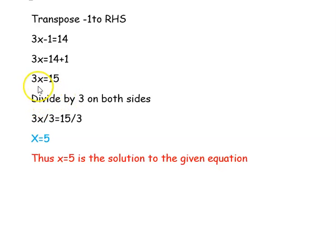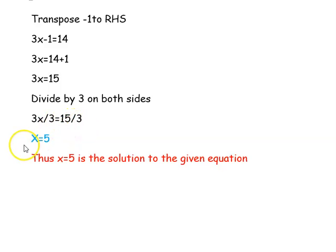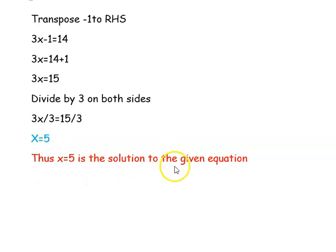We are going to divide by 3 on both sides of the equation. 3x divided by 3 equal to 15 divided by 3. x equal to 15 by 3, which is 5. Thus, x equal to 5 is the solution to our given equation.